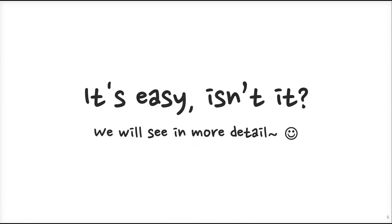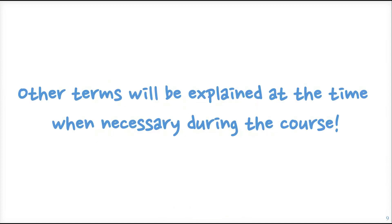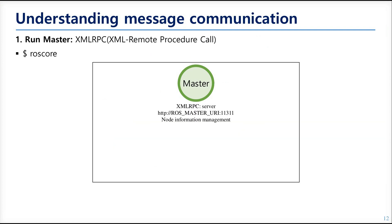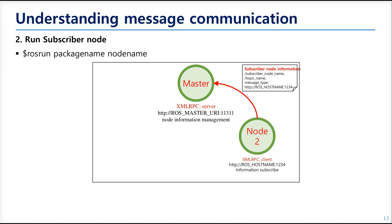We saw three communication methods in ROS. Now we'll dig deeper into how communication runs in ROS. Before node communication, there are some procedures. We must first run the ROS core, as we did when testing the ROS installation. When you run ROS core, it calls XML remote procedure and starts to manage information about the nodes.